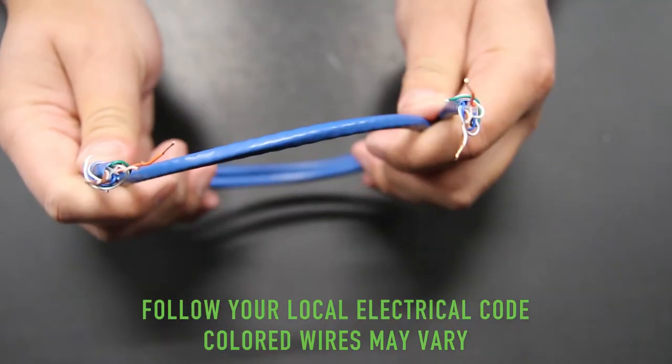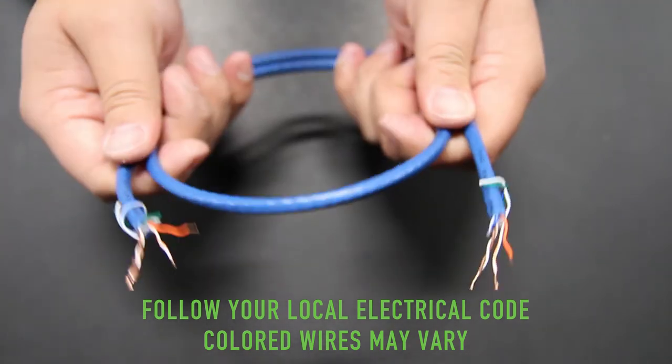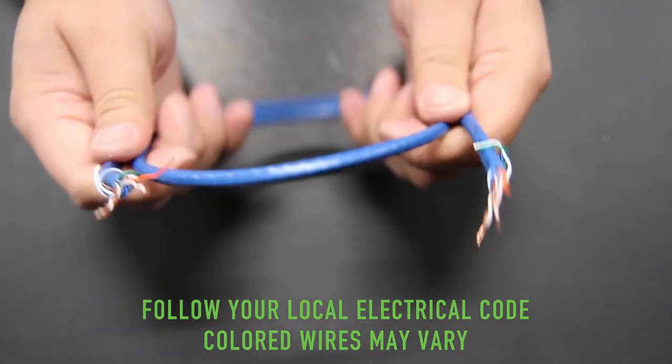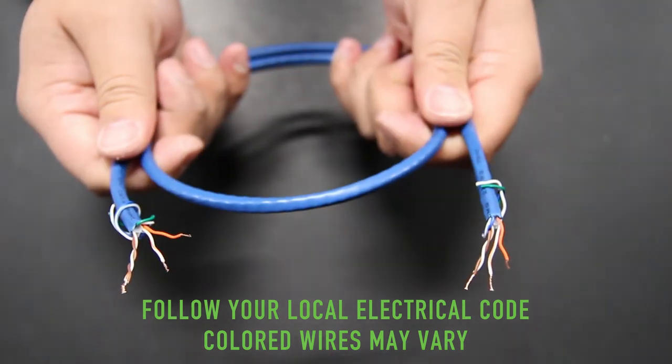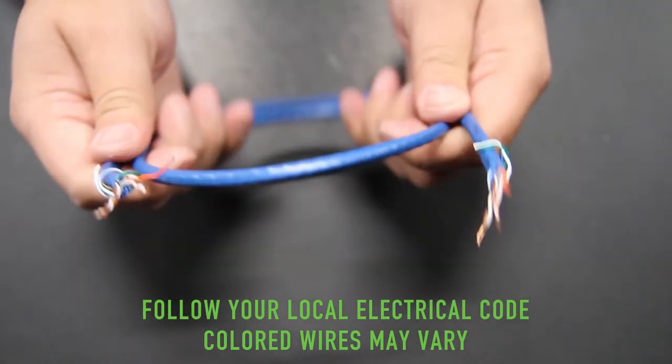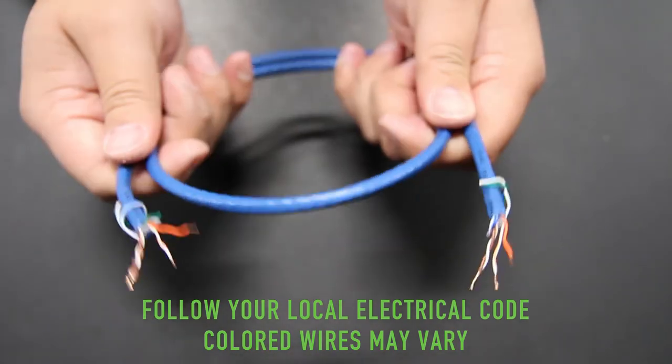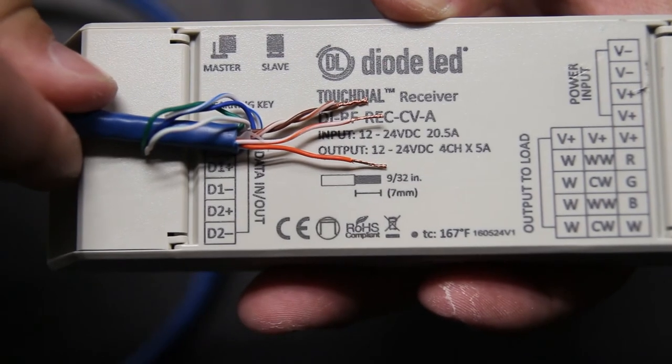Cut and strip a length of data wire that is needed for your application. Most data cables will be color coded and color coded differently depending on the brand and style. You can use any colors you like that are available. However, it's best to follow your local electrical code requirements for data communication cabling. Strip the wire to expose approximately five sixteenths of an inch or eight millimeters of copper wire. For your convenience, an image of the dimensions can be found on the face of the touch dial receiver.